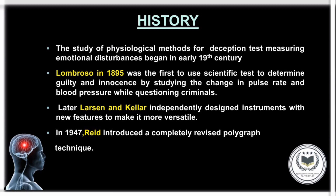Later, in 1895, Lombroso was the first to use scientific tests to determine guilt or innocence by studying changes in blood pressure and pulse rate while questioning criminals. Then Larson and Keeler independently designed instruments with new features to make it more versatile. And in 1945, John Reid observed that muscular activity could change a person's blood pressure to an extent which could affect the accuracy of the examiner's diagnosis.